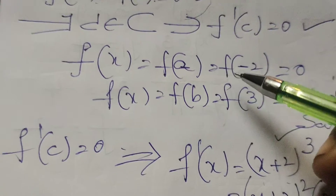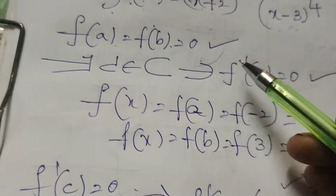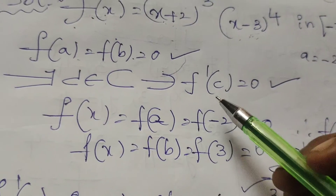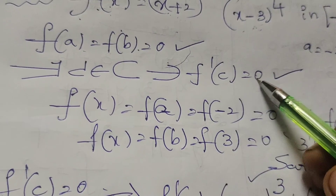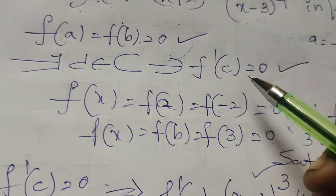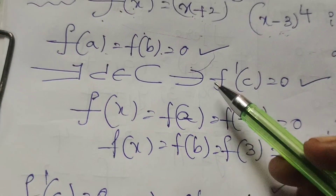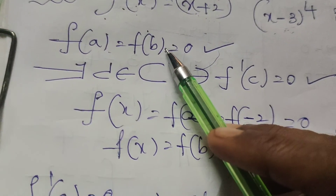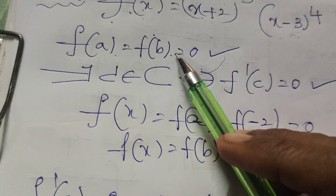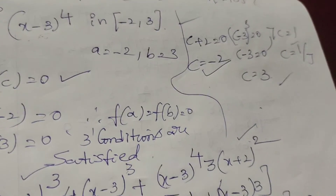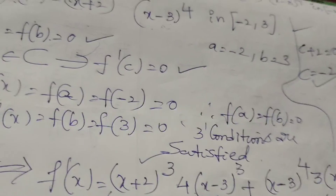Hence Rolle's Theorem is verified. The conditions f'(c) = 0 and f(a) = f(b) = 0 are both satisfied. Thank you.